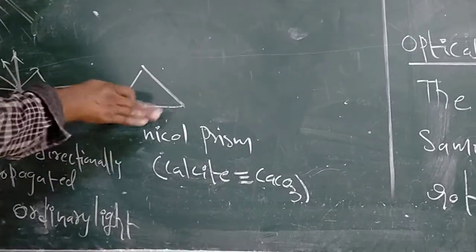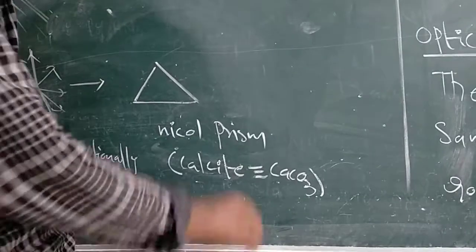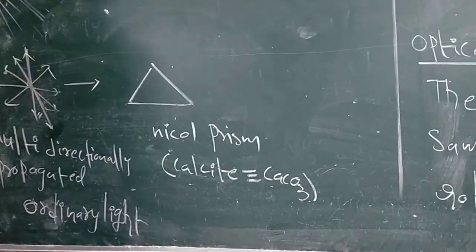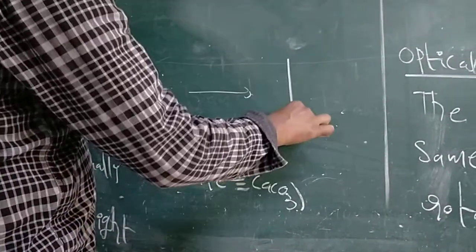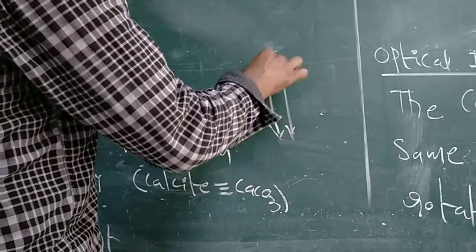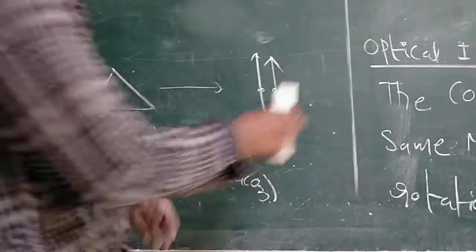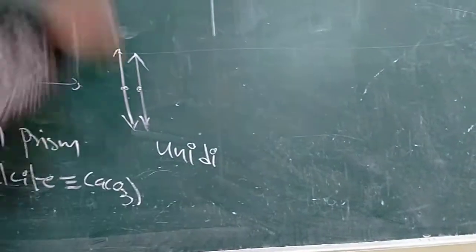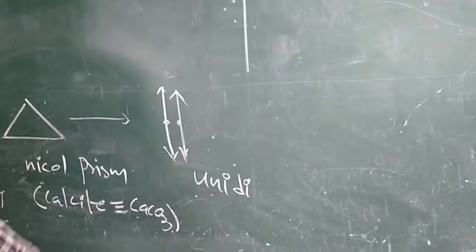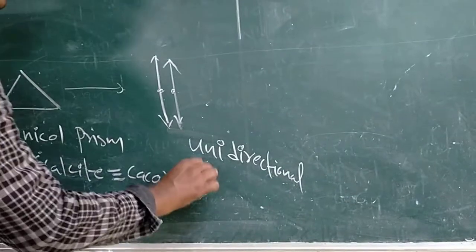What comes out of the Nicol prism — the multidirectionally propagated light — becomes unidirectional. It will propagate in only one direction, from the Y axis. This unidirectional propagated light is called plane polarized light.